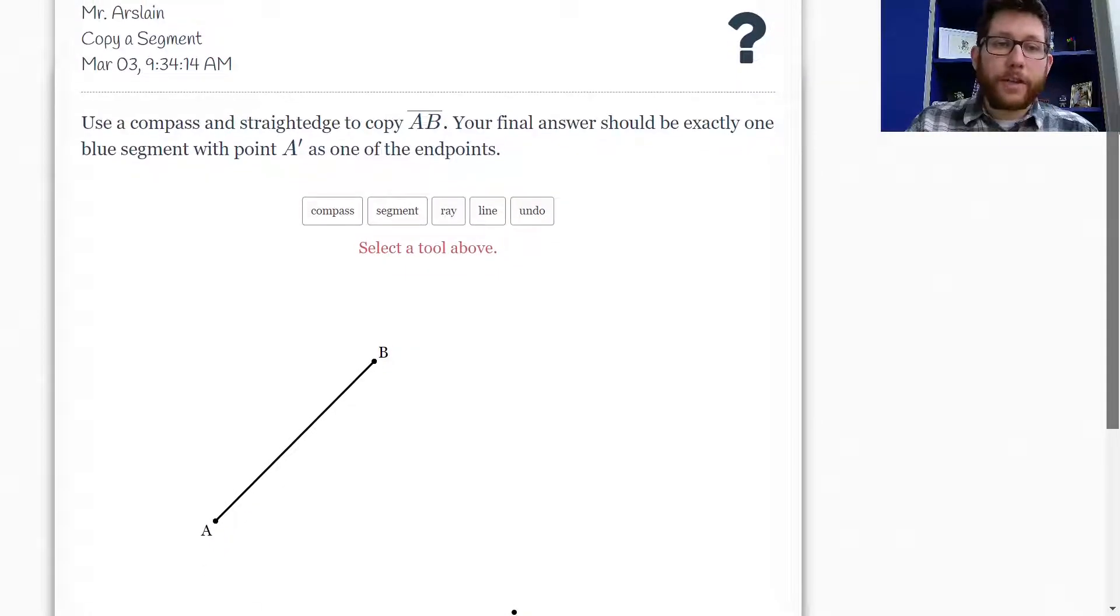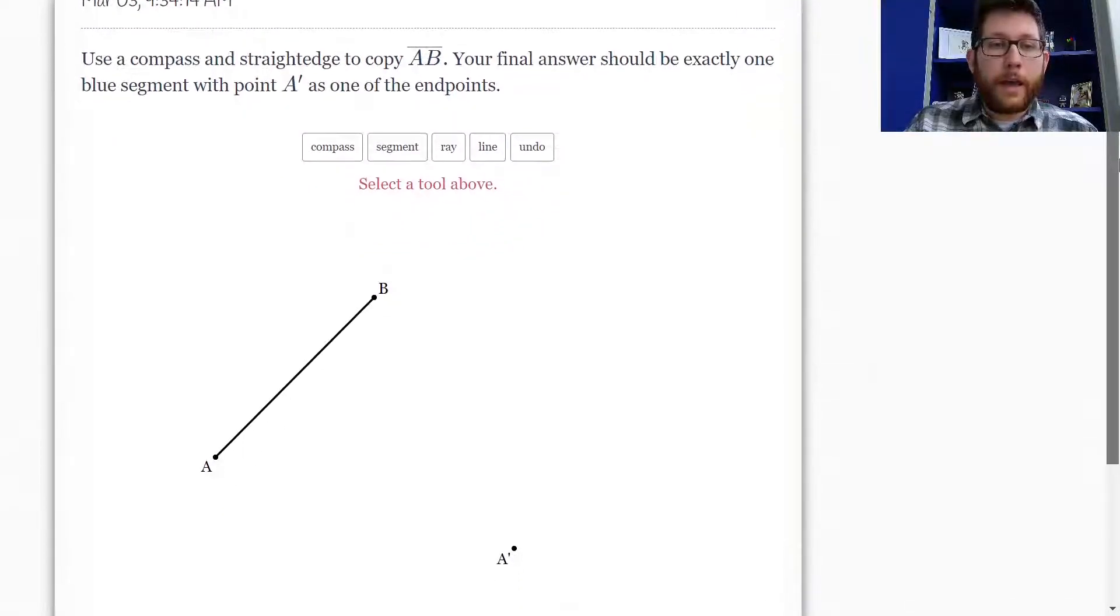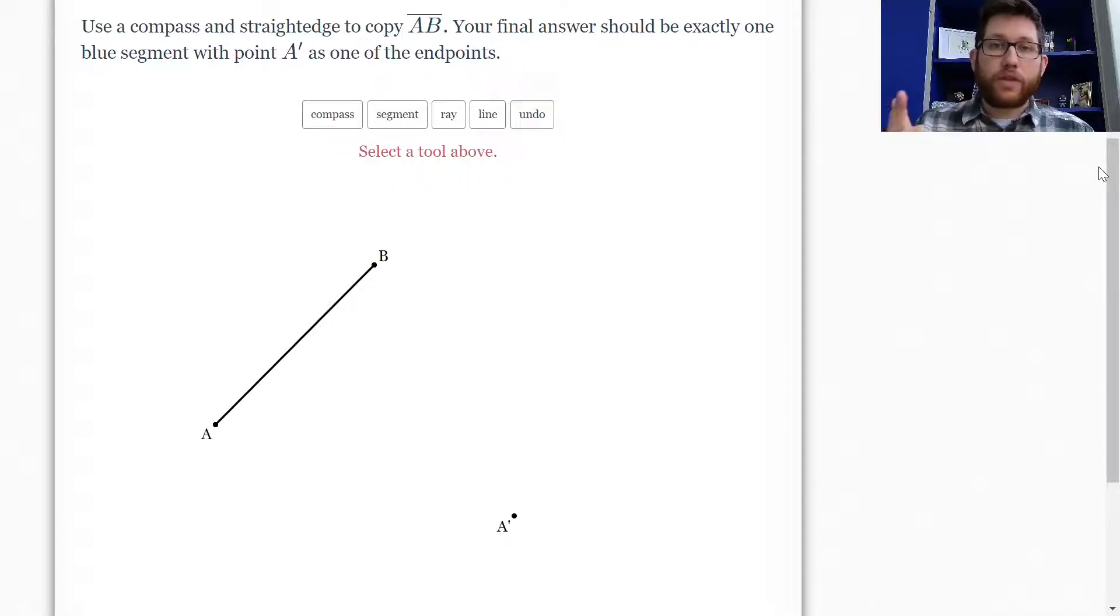This is oftentimes the first construction that you do, and it's called copy a segment. And what our goal is, using a circle and a straight line maker, we want to take this segment here and make a second segment that's congruent. It doesn't necessarily have to be going the same direction. It just needs to be the same size.